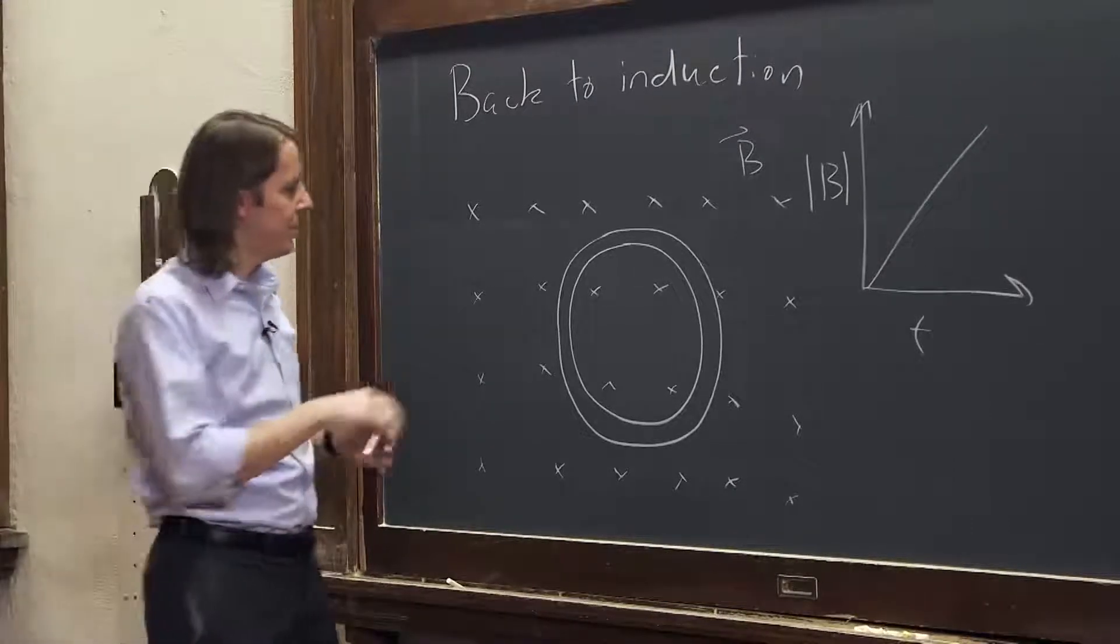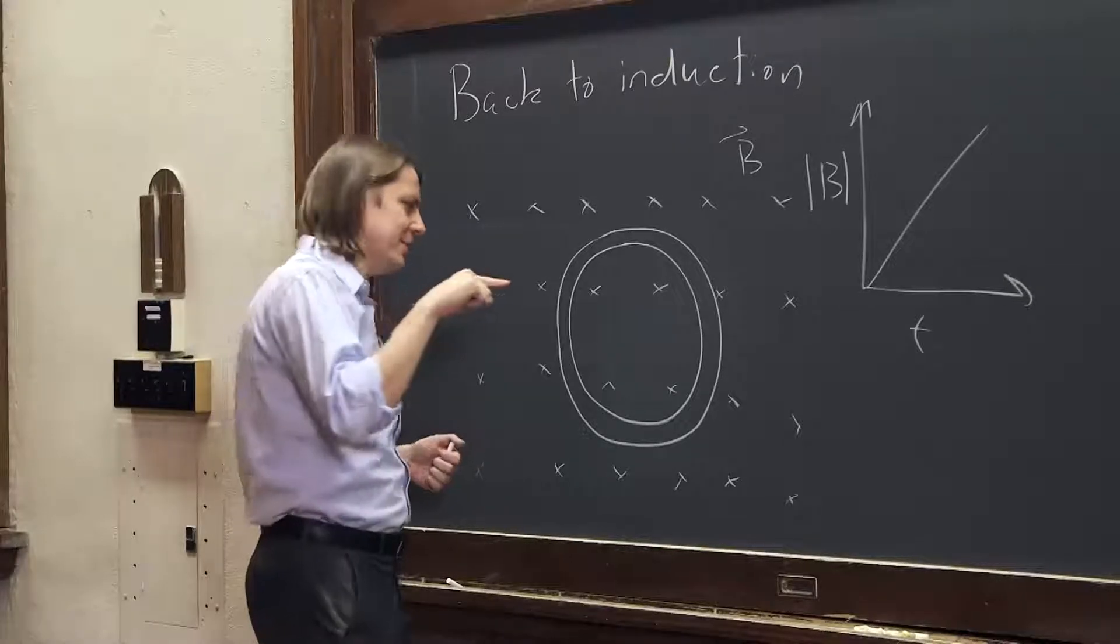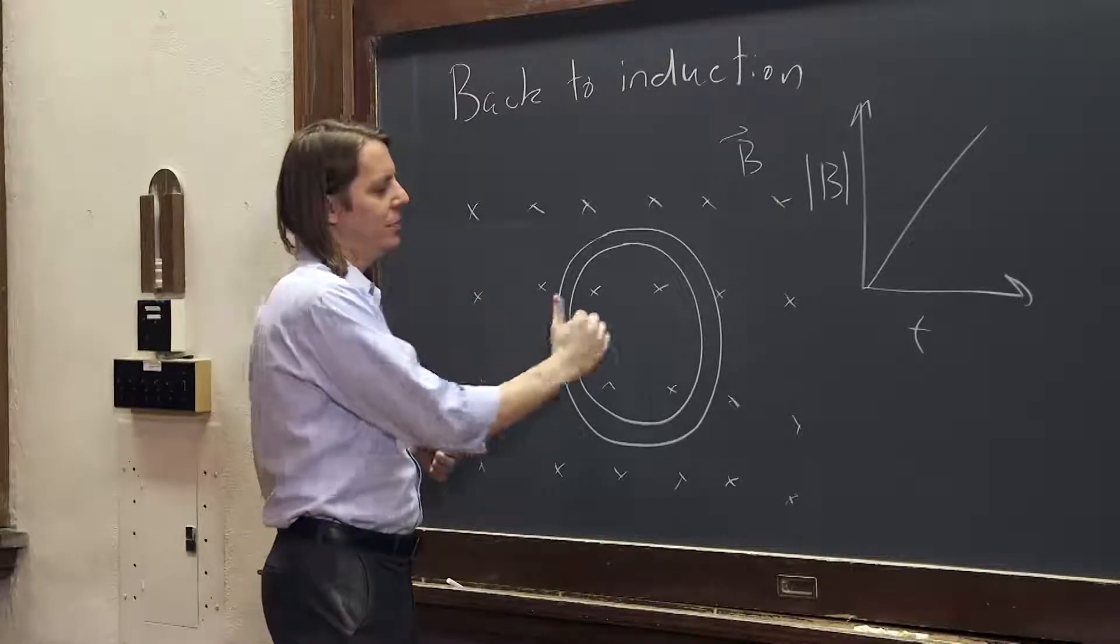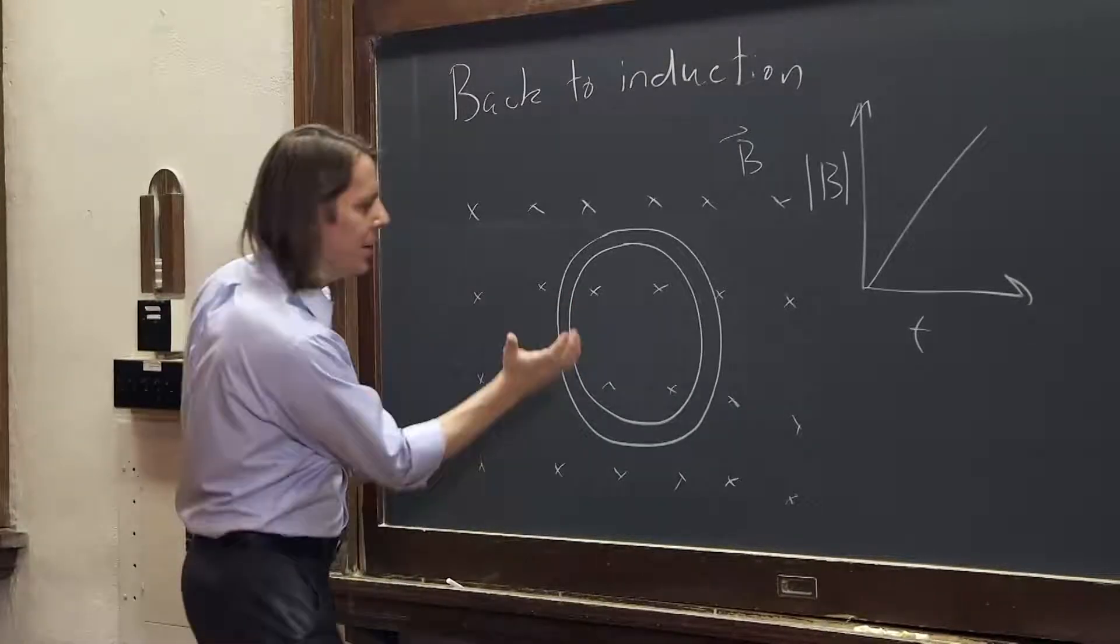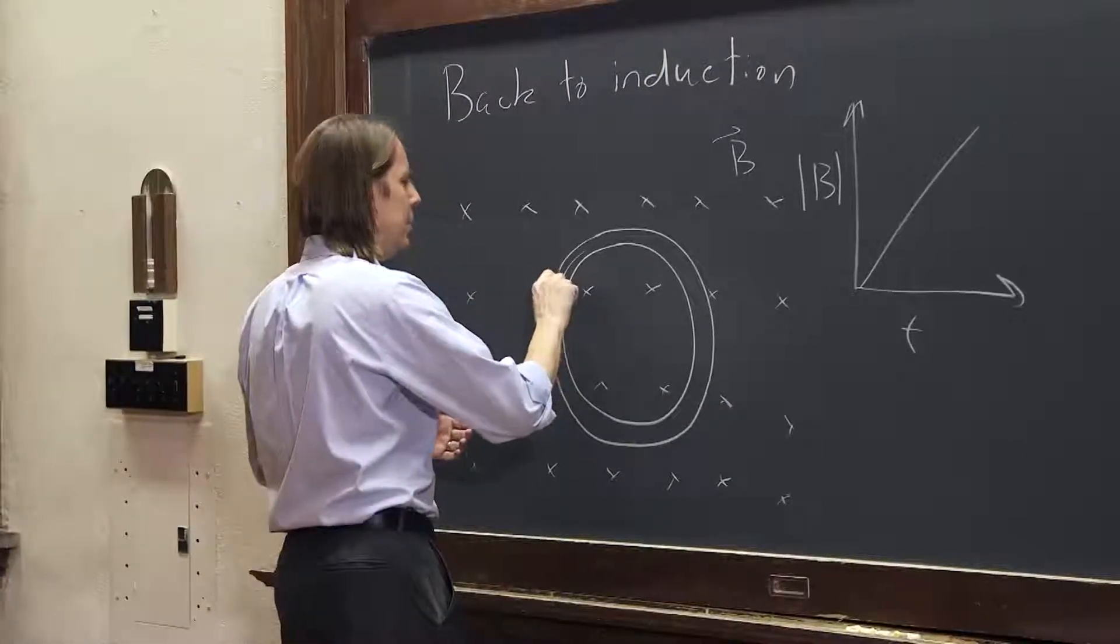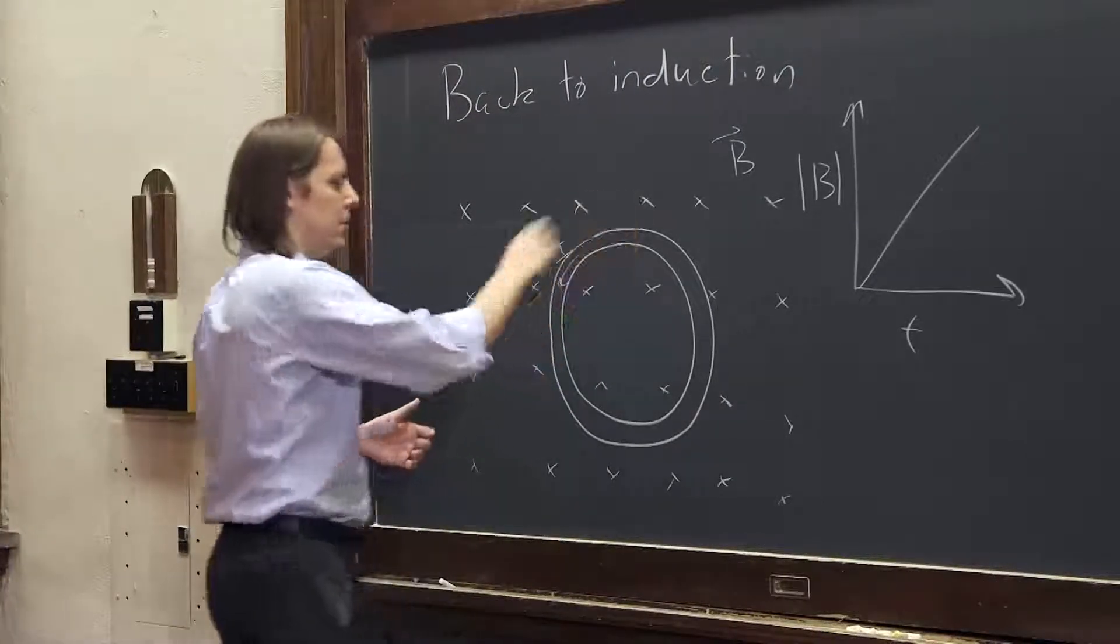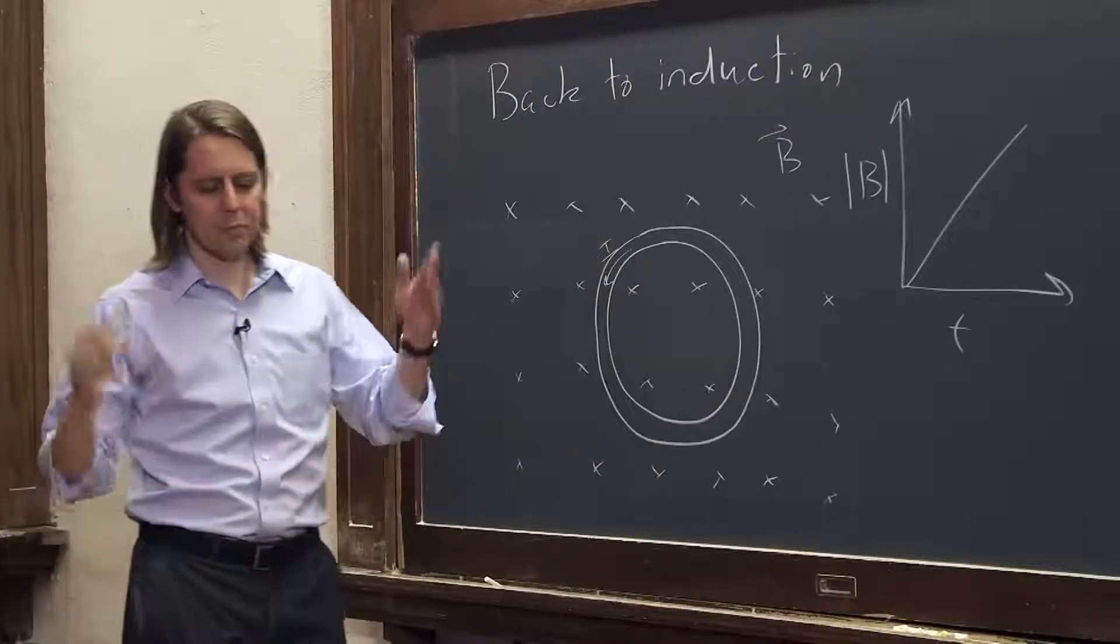We can think about the direction. If the field is increasing that way, we want to oppose that. So we want to make a field this way. By the right-hand rule, that means there's current going around the loop like that. That's induction.